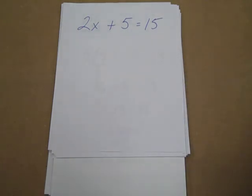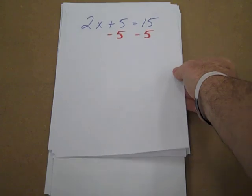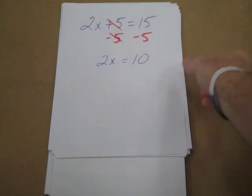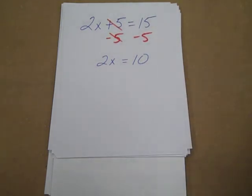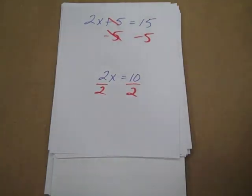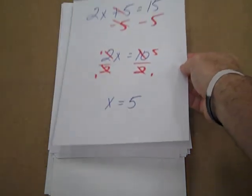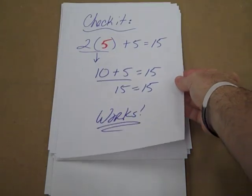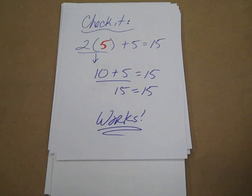Another example: we're going to get rid of the 5 first by taking it by a negative. We're going to do that to both sides. Simplify the right side, bring down what's left on the left-hand side. Again, we're going to simplify the one-step equation. So we divide by 2, which simplifies it down to x equals 5. Again if we check it, this is what it looks like — so we would have a correct answer.